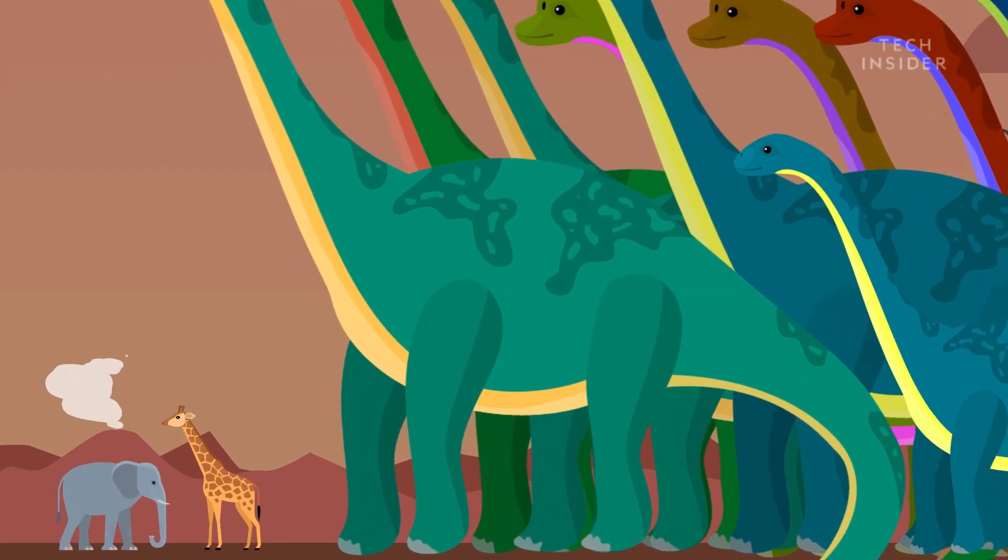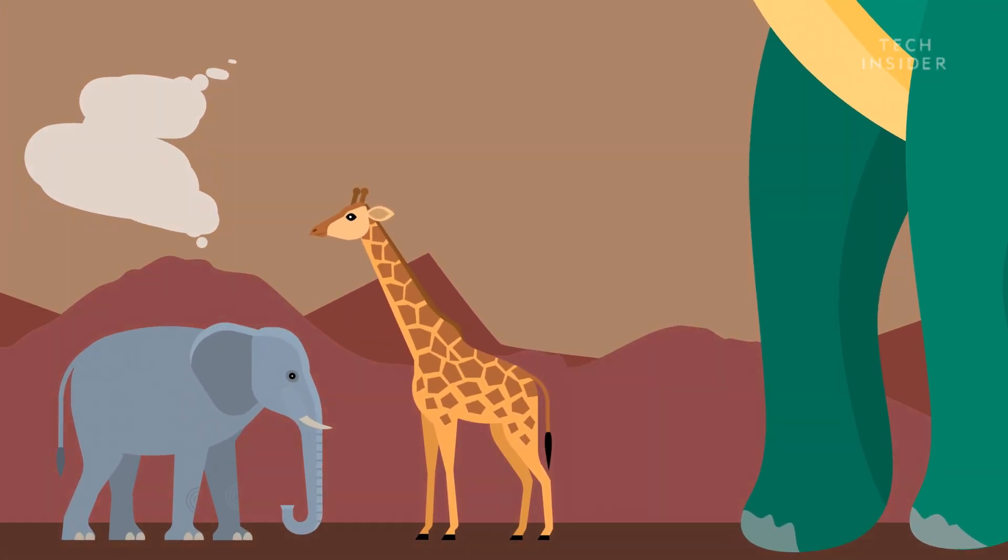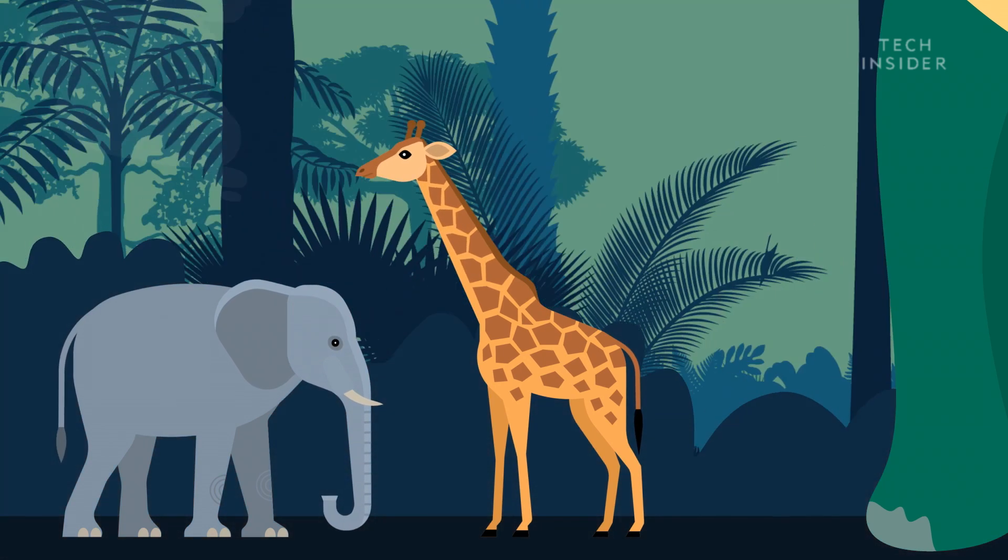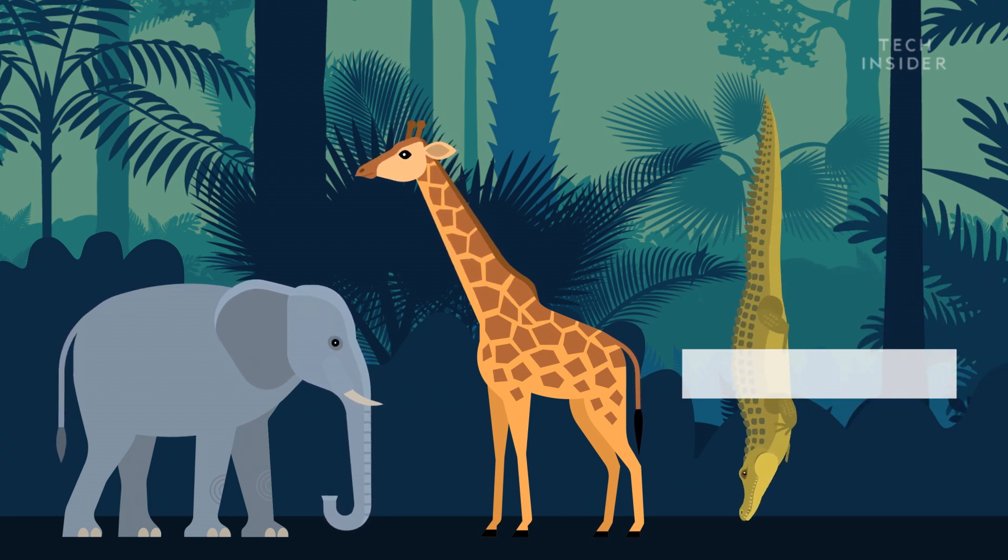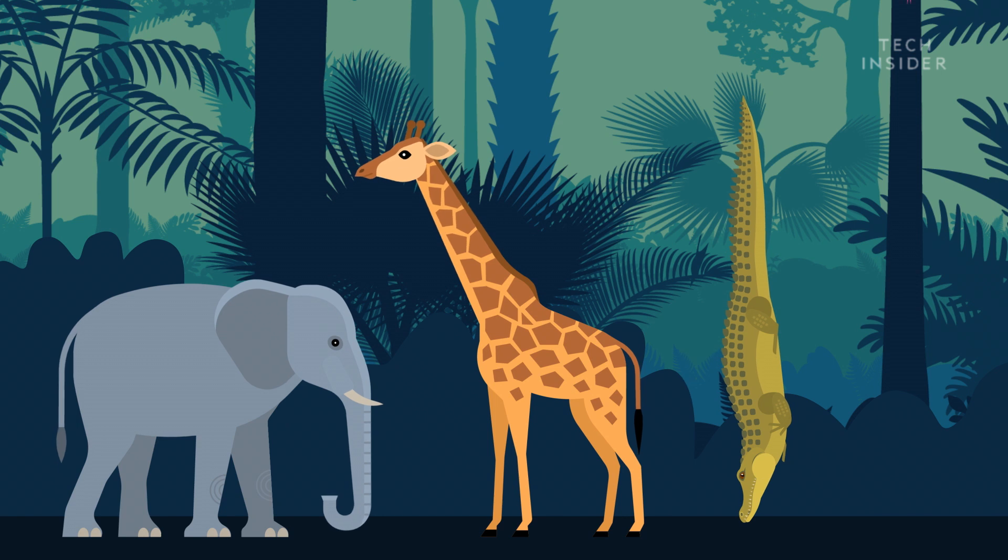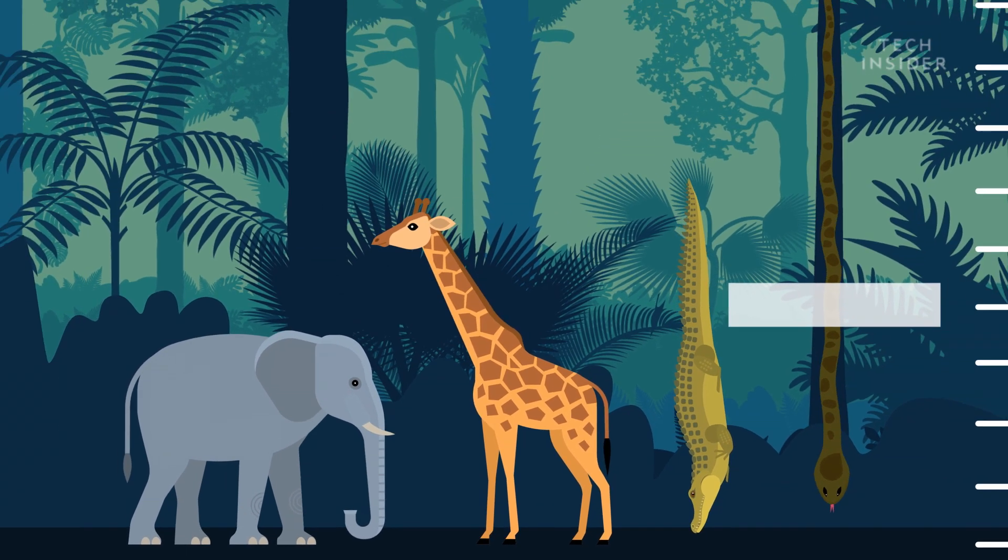But what if we looked at the longest lifeforms, too? If you balanced the longest saltwater crocodile on its nose, it would tie the giraffe. And if we ignore legs, it gets even better. Tip to tail, the green anaconda nearly doubles the height of the tallest giraffe.